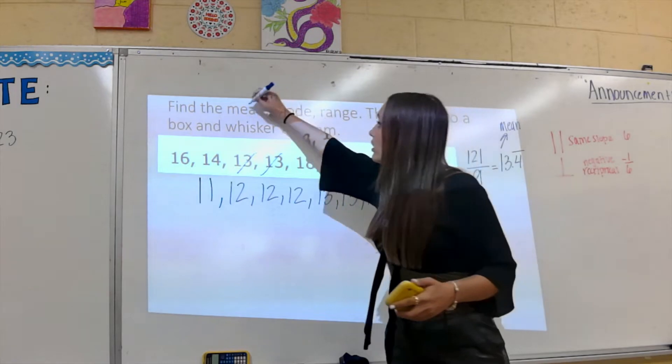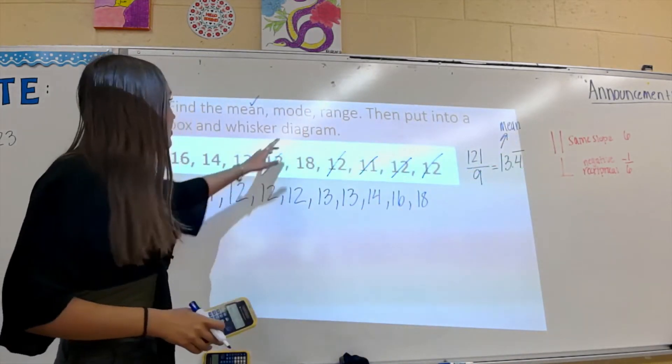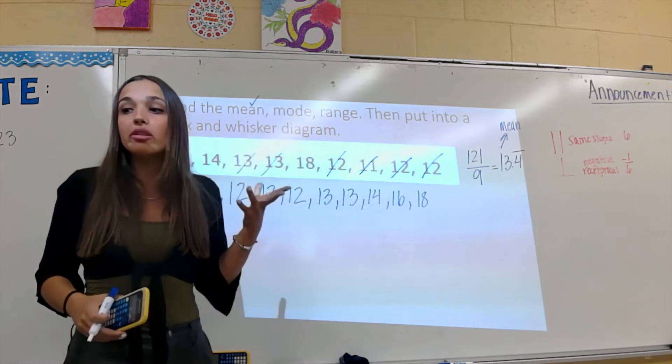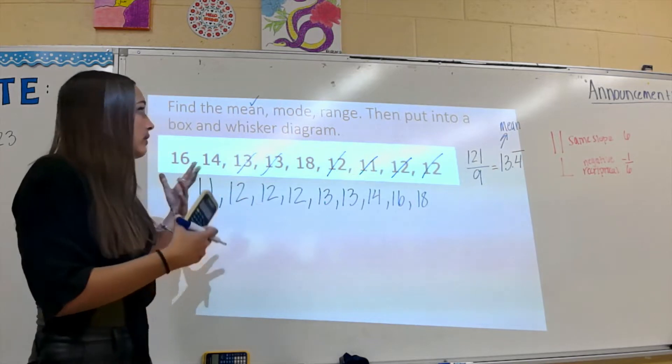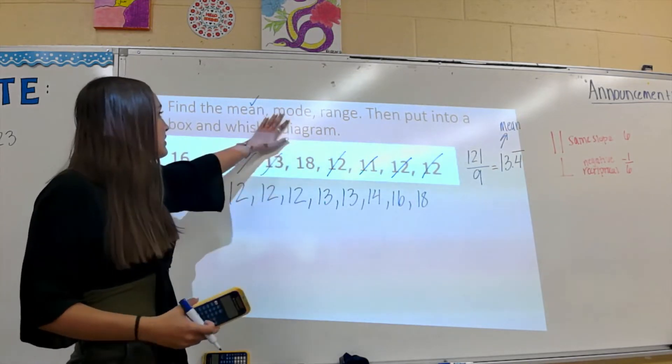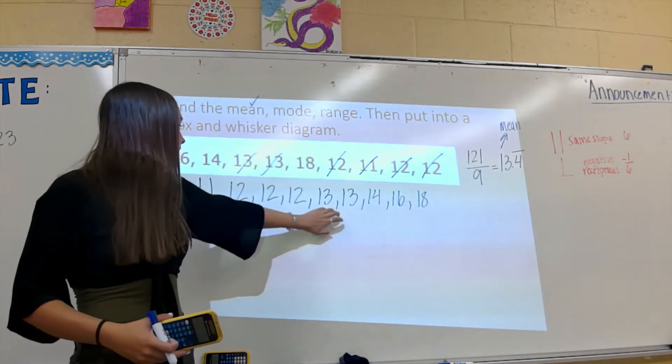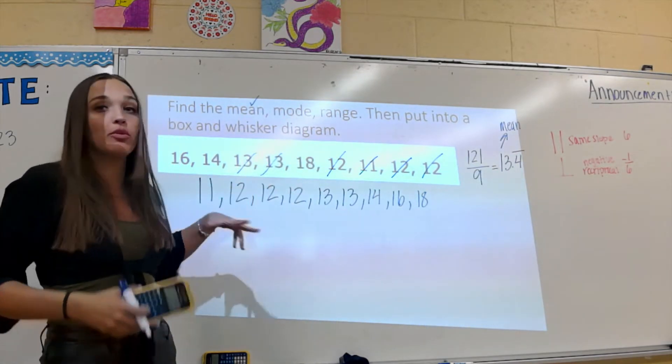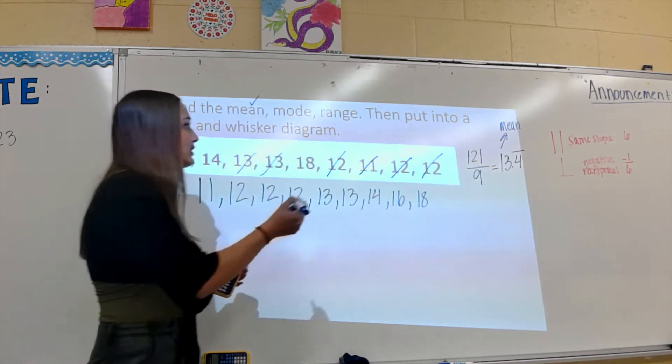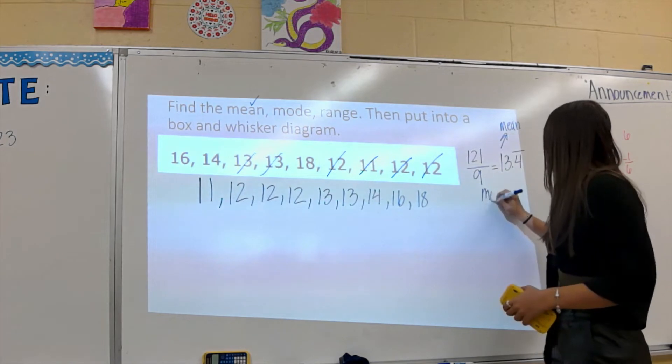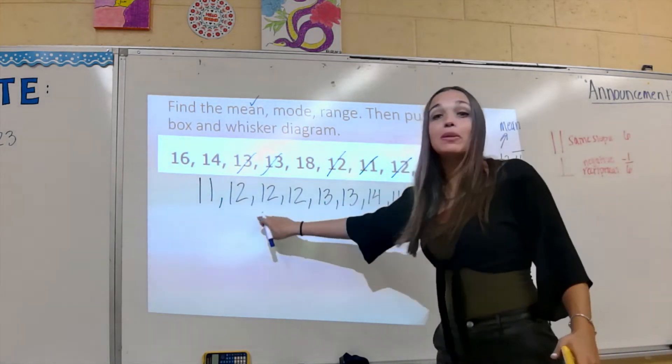So that's my mean, check. Now I want the mode. It's important we know what this vocab word means. The mode is the number that repeats the most, that's present the most. So if we look, we have two 13s, we have three 12s. Well, there's more 12s. So because there's three of them, our mode is going to be 12. My mode is 12, that's the number that repeats the most.